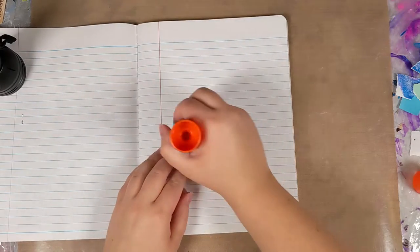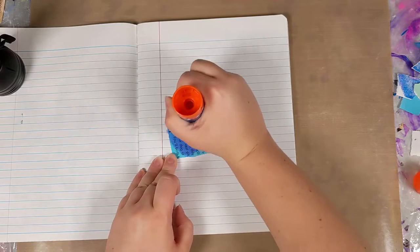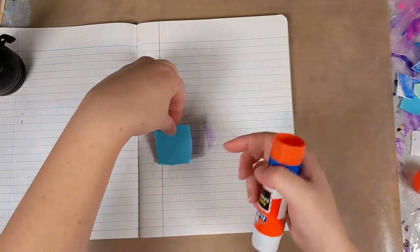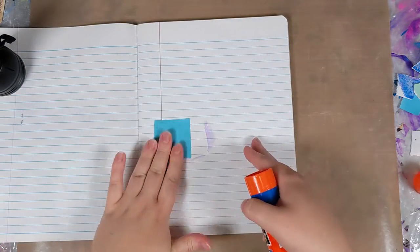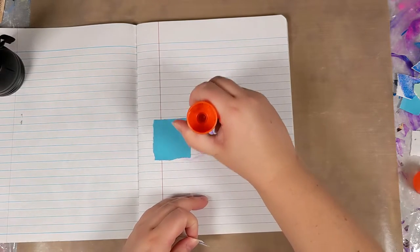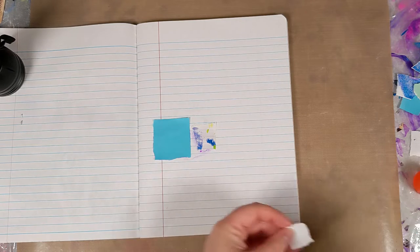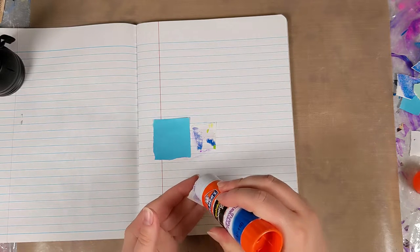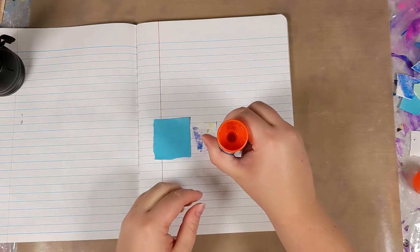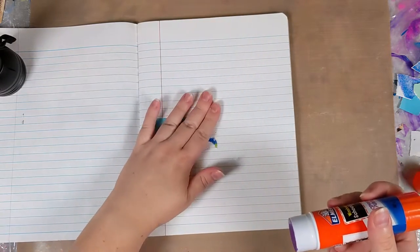Next you're just gonna want to start gluing things down. There's no real rhyme or reason or rules to this. Basically just start somewhere. I recommend starting kind of near the middle of the page because then you can go out from that and then just put down pieces that you think look good next to the other pieces. It's a very simple process and you can do it however you want.